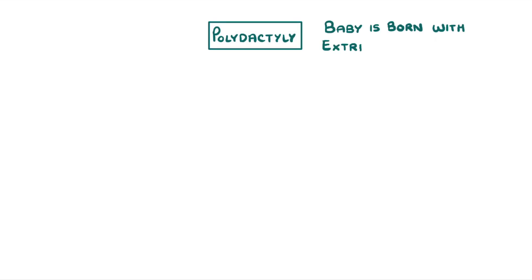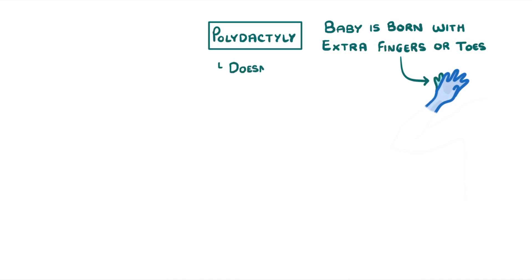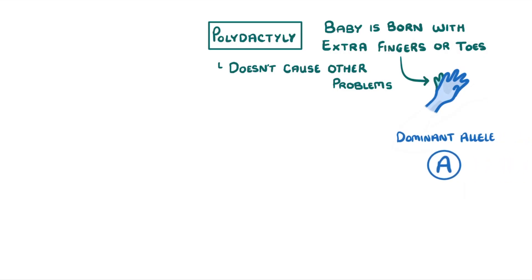Let's start with polydactyly. Polydactyly is a condition in which a baby is born with extra fingers or toes. Luckily it doesn't usually cause any other problems. The main thing to remember about it though is that it's caused by a dominant allele.